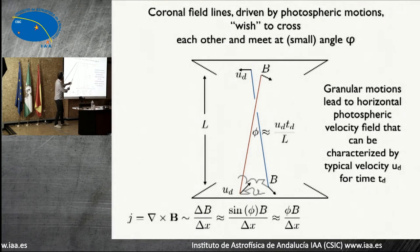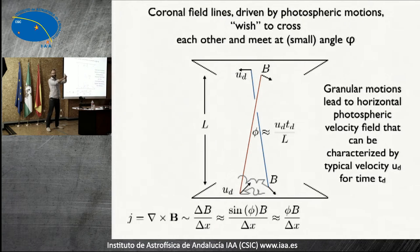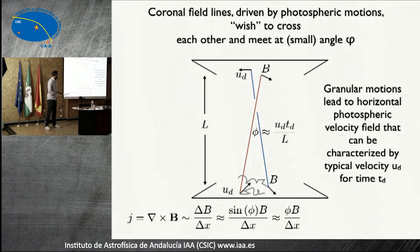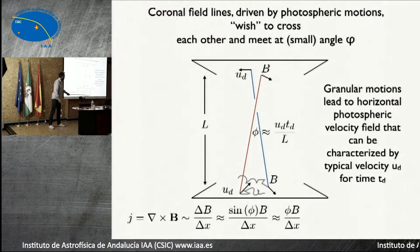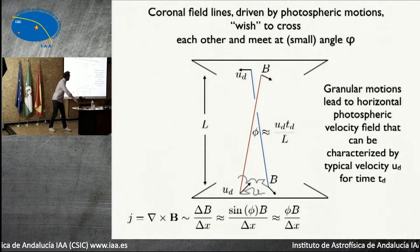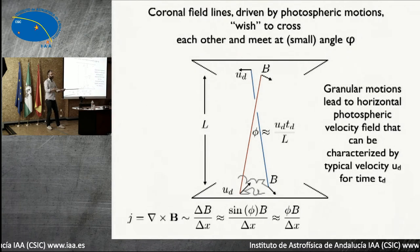Essentially, we have field lines being moved around by some sort of motion in the photosphere. At some point they're going to meet each other and want to go through each other, because they're being pulled in opposite directions. That means we generate a current, and the amount of current depends on their separation but also on the angle at which they meet. If they meet at a large angle, you get a big current. If they meet at a very small angle, you get a smaller current. It turns out that the angle they meet at, if you're just using photospheric motions, is going to be pretty small.